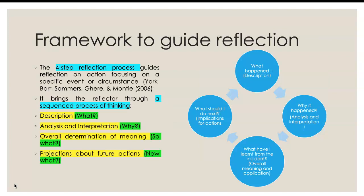There's a framework to guide this reflection — the four-step reflection process by York, Bar, Summers, Gear and Monty. It's in the form of a sequence, a process of thinking. The first step is to identify an incident, problem, or issue that happened, and describe what happened. For example, you wanted to do a role play but the students were not willing to do it.